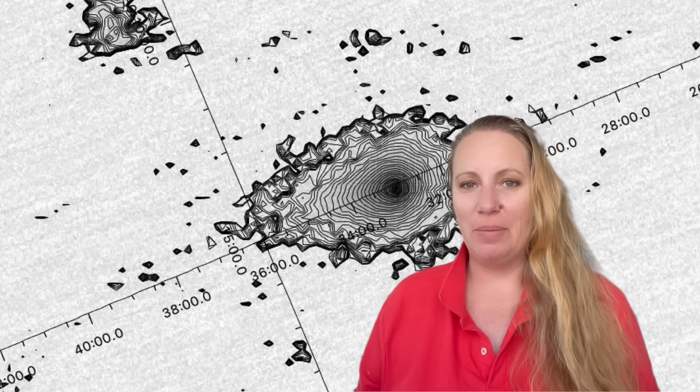Hi guys, what is interstellar object 3i Atlas doing today? It is doing something - the tail has wobbled before perihelion, guys, and it's crazy.